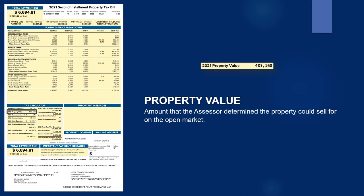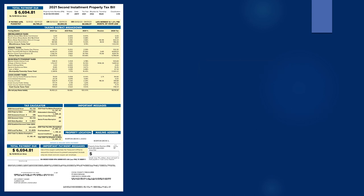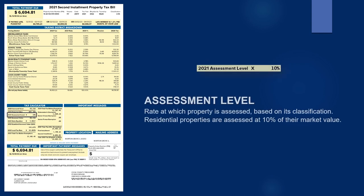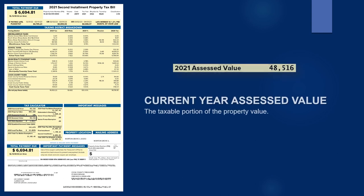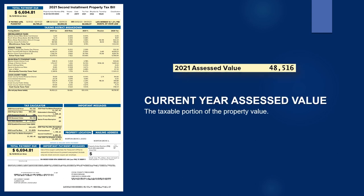The property value is the value the Assessor determined the property could sell for on the open market. The assessment level is based on its classification. Residential properties are assessed at 10% of their market value. The current year assessed value is the taxable portion of your market value.